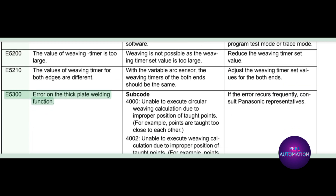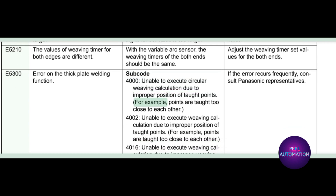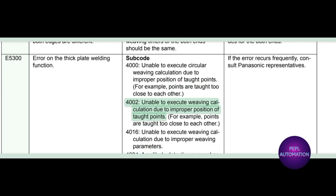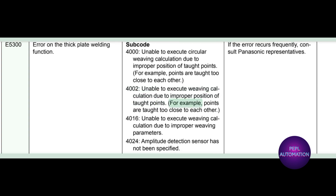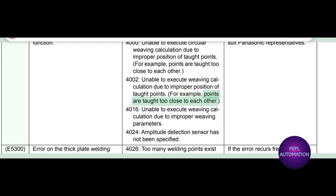E5300: error on the thick plate welding function. Subcode 4000: unable to execute circular weaving calculation due to improper position of taut points; for example, points are taut too close to each other. Subcode 4002: unable to execute weaving calculation due to improper position of taut points; for example, points are taut too close to each other.